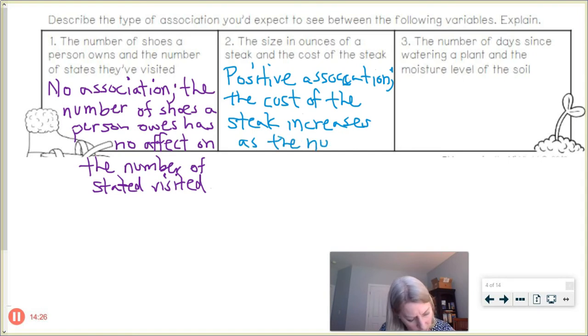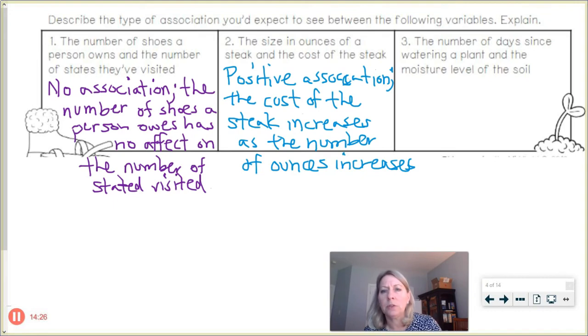So it's a positive correlation or positive association. And number three, the number of days since watering a plant and the moisture level of the soil. All right, so if it's been a lot of days since I've watered a plant, what happens to the soil? Gets more dry, right? So the moisture level goes down. So the days are increasing since I last watered, but yet the moisture in the soil goes down because the soil is getting dry. So this sounds like a negative association. One thing's going up, one thing's going down.